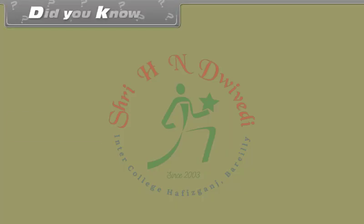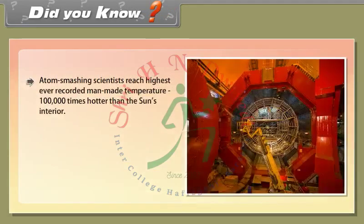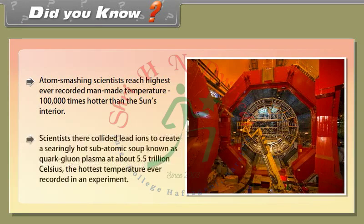Did you know? Atom-smashing scientists reached the highest ever recorded man-made temperature — one lakh times hotter than the sun's interior. Scientists collided lead ions to create a searingly hot subatomic soup known as quark-gluon plasma at about 5.5 trillion degrees Celsius — the hottest temperature ever recorded in an experiment.